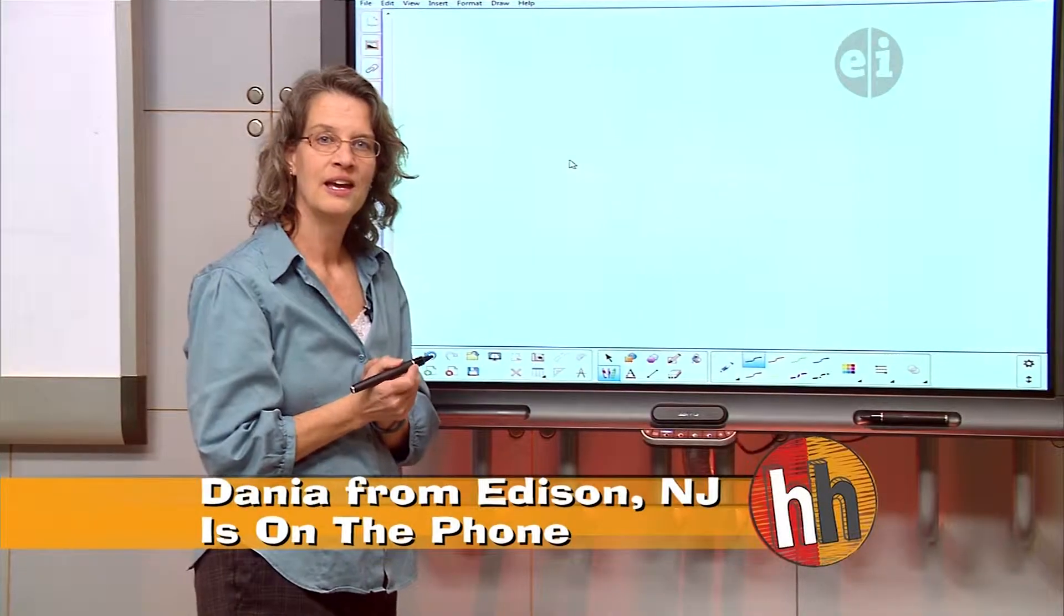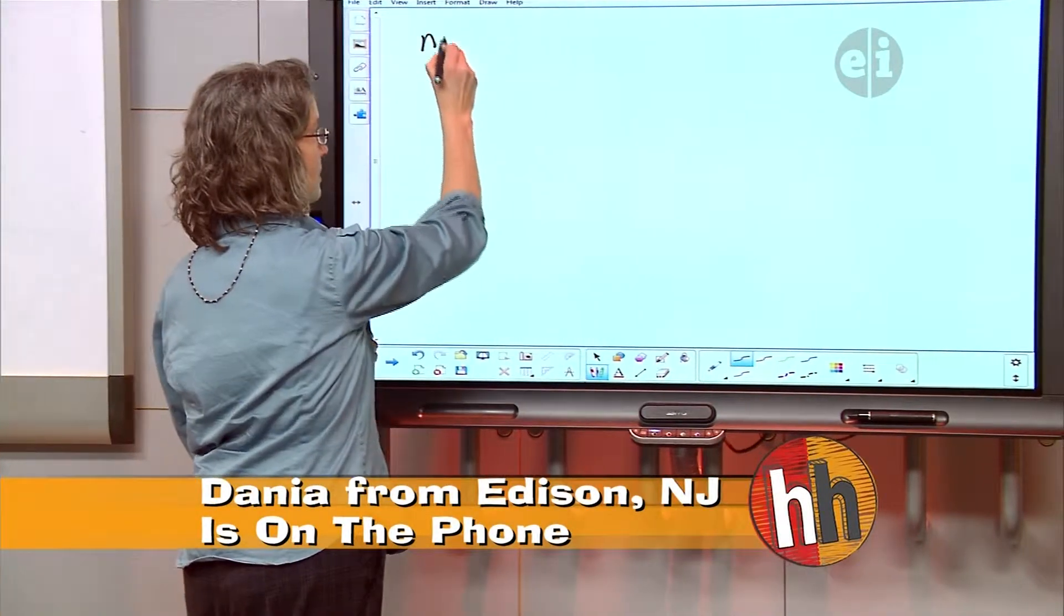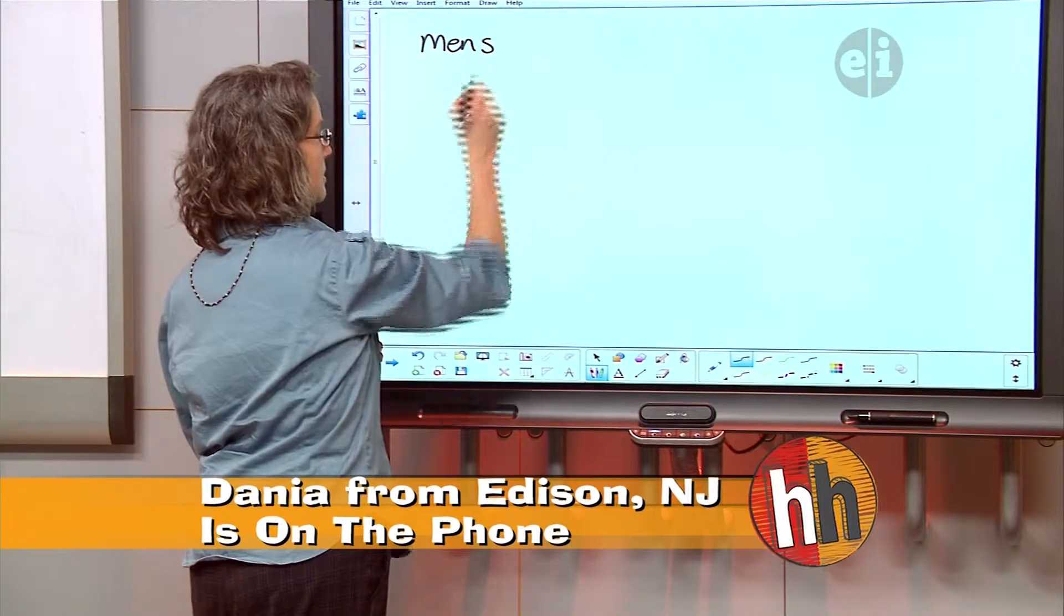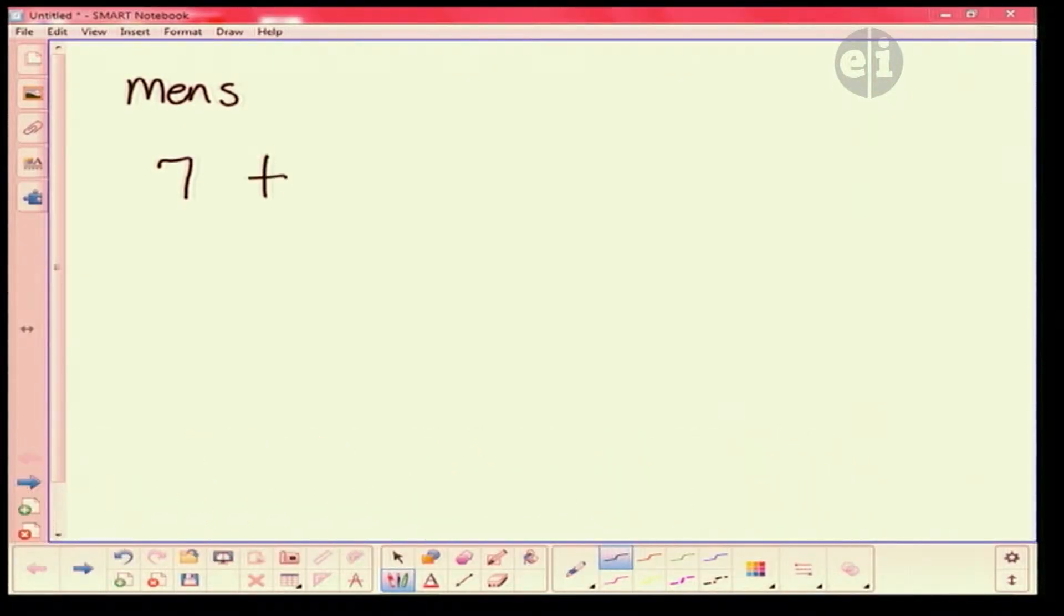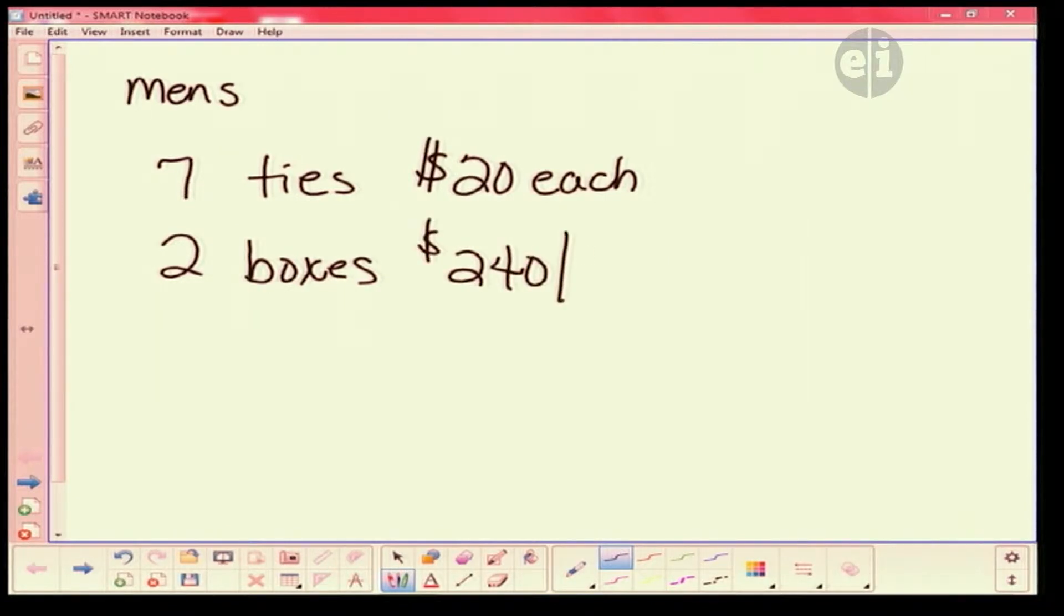A men's store restocking itself purchases seven ties at $20 each. Seven ties for $20 each? Yes. Two boxes of bow ties at $240 a box. $240 a box? Yes.